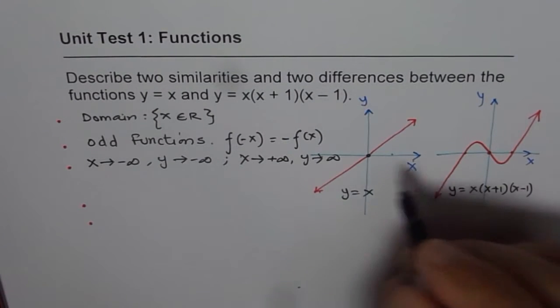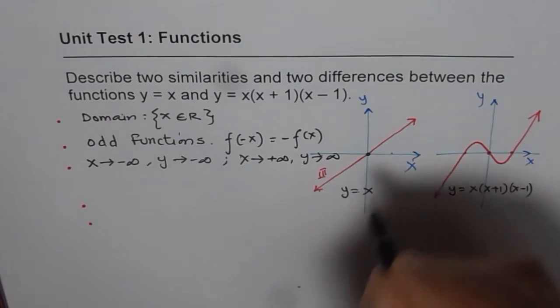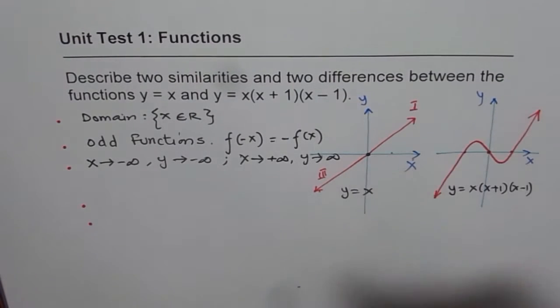And of course, they move from quadrant 3 to quadrant 1. These are some similarities. Now, how about their differences?